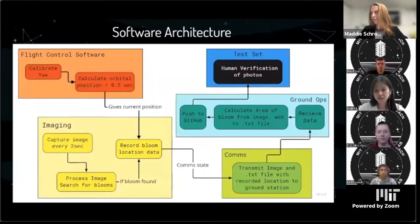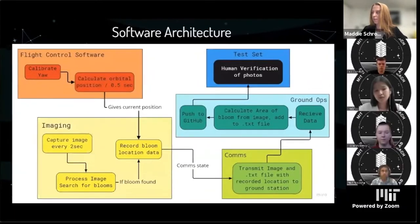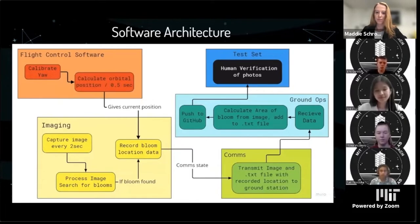For our software architecture, for imaging, we weren't getting as many images as we could in one orbit or processing as many images. So we decided to bump up capturing an image every two seconds to one second, so that way we could process more and not potentially miss an algorithm. Another thing we changed was for our ground ops, which Neil can discuss.